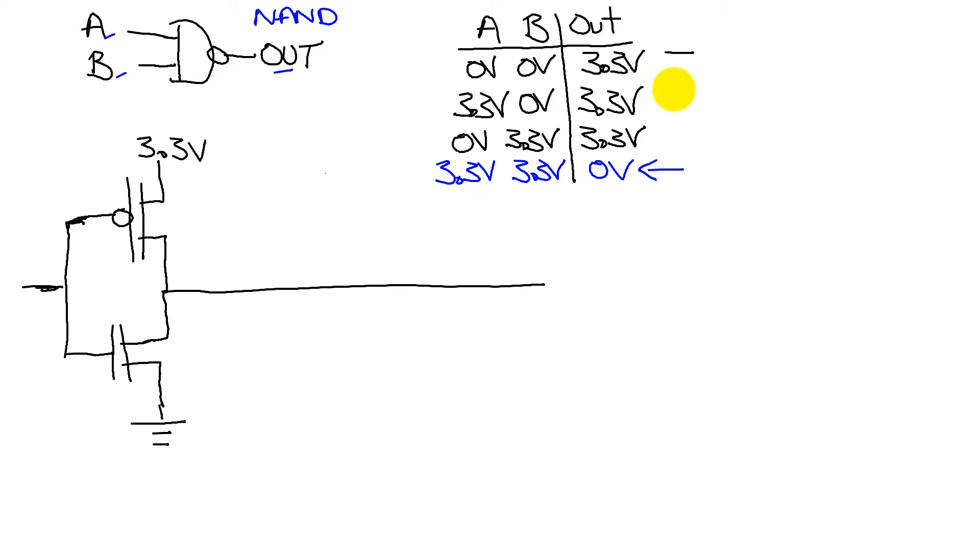Conversely, if either A or B are zero, then the output will be true. Okay, that's a NAND gate.